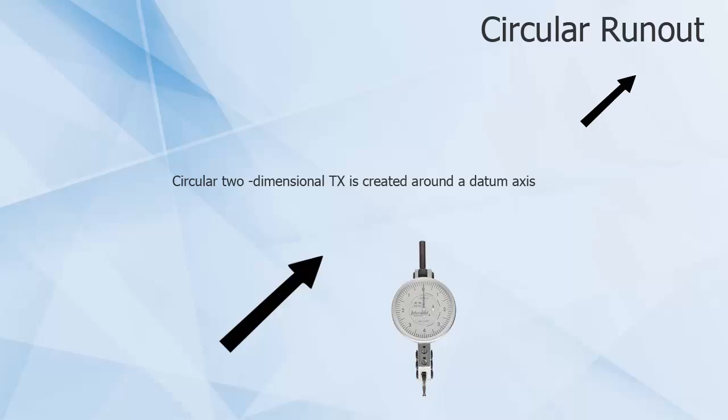In circular runout, a circular two-dimensional tolerance zone is created around a datum axis. The arrow symbol for runout relates to the way it is measured, which should also help you understand how it works.